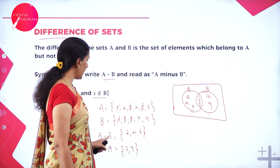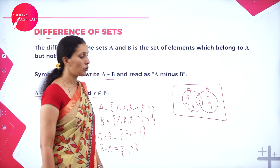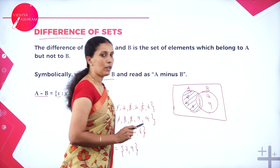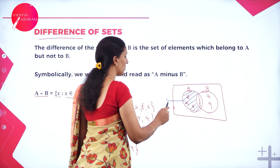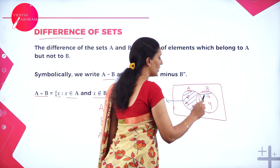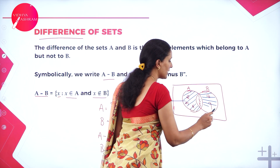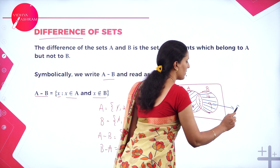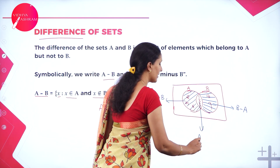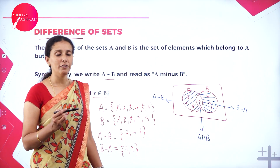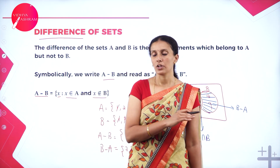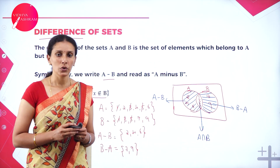When I say A minus B, that includes only the region containing 2, 4, 6. So clearly this region gives you A minus B. When I say B minus A, that contains only 7 and 9 — the region containing only 7 and 9 represents B minus A. The central overlapping region is A intersection B. So the difference of sets is nothing but the element which is in the first set but not in the second set.